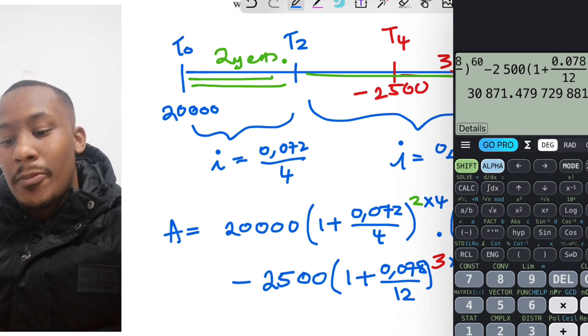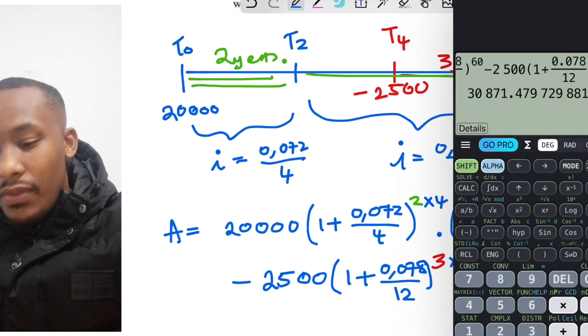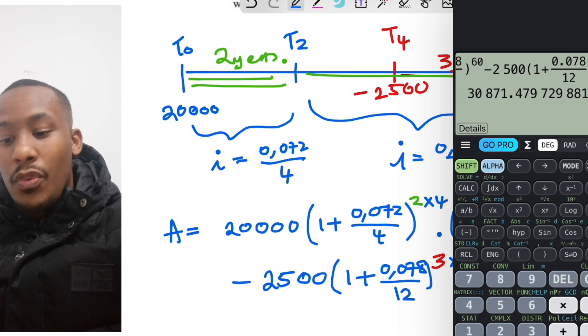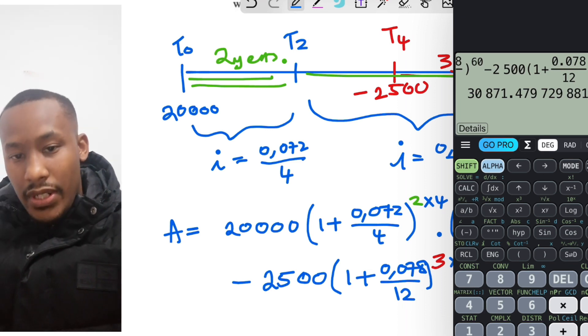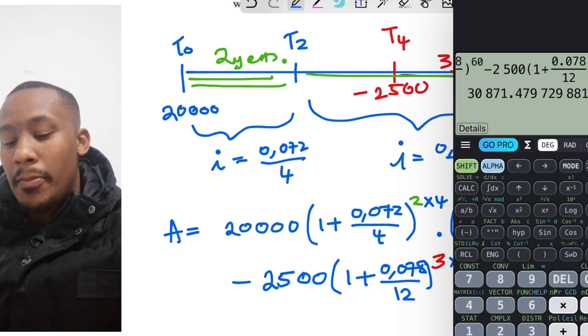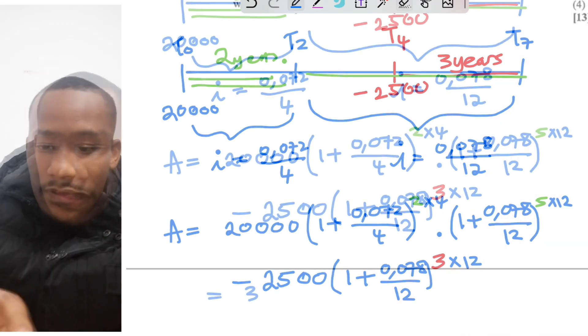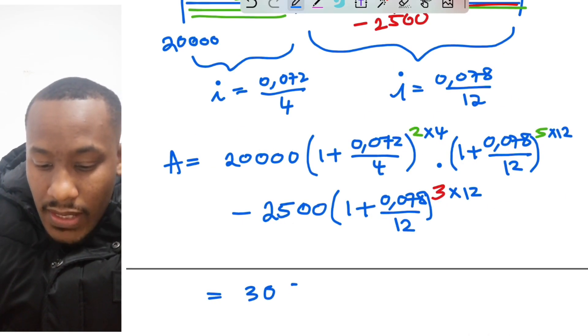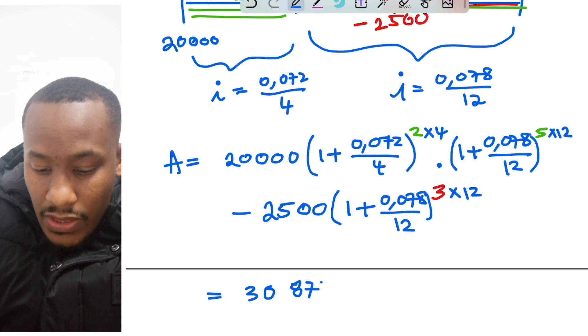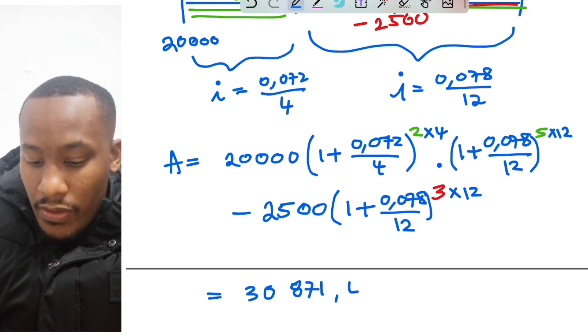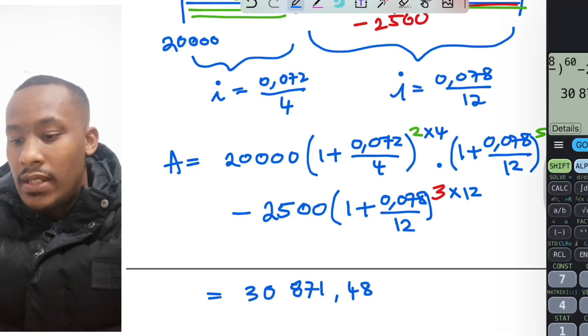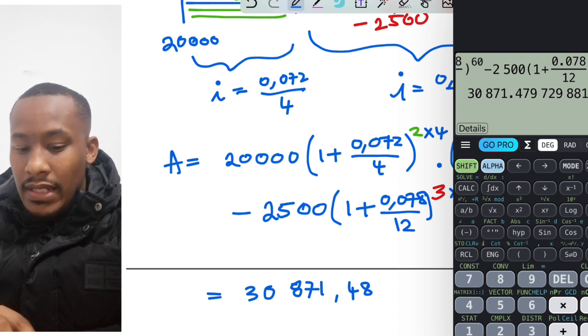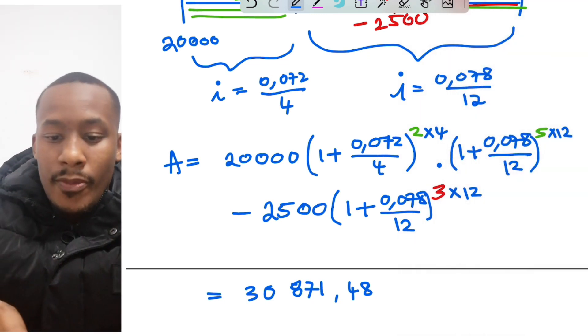There's our final answer. It's 30,871 Rand with 48 cents rounded. Let's write that down. This is 30,871.48 cents. Let's just confirm that. Yeah, that is the correct answer.